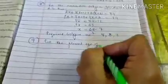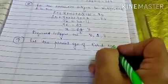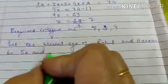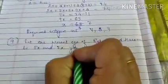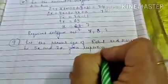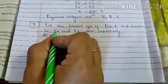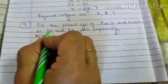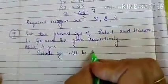Let the present ages of Rahul and Harun be 5x and 7x years respectively, because they are in the ratio 5:7. Now after 4 years, Rahul's age will be 5x plus 4.